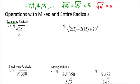So 289 — if you type that into your calculator, you should get 17. I'm going to make you memorize a whole bunch of perfect squares so that you'll be able to recognize them, and this is just one of them.